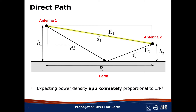First, let's consider the direct path. E sub 1 is the electric field intensity arriving at Antenna 2 along a direct path from Antenna 1. The distance between the two antennas is slightly greater than r, so we give this distance a different name, d sub 1. If this is all we have, then the power density incident on Antenna 2 is proportional to 1 over d sub 1 squared, simply because we have a spherical wave radiating from Antenna 1. Furthermore, if r is much greater than the difference in antenna heights, then this power density is approximately equal to 1 over r squared.